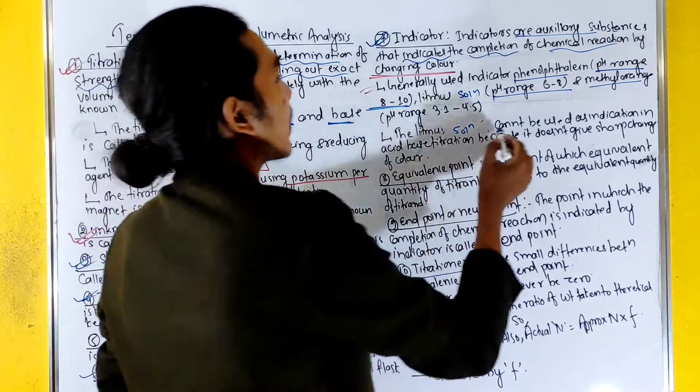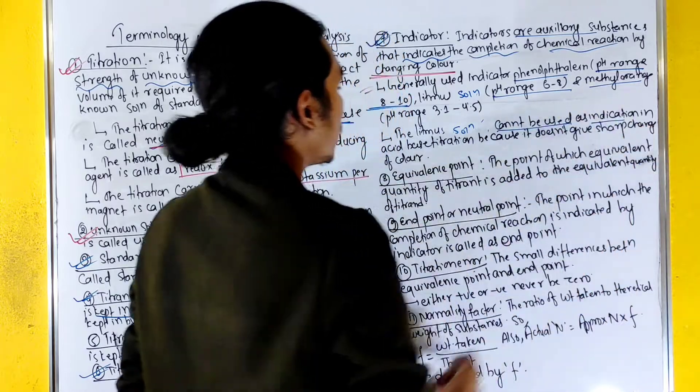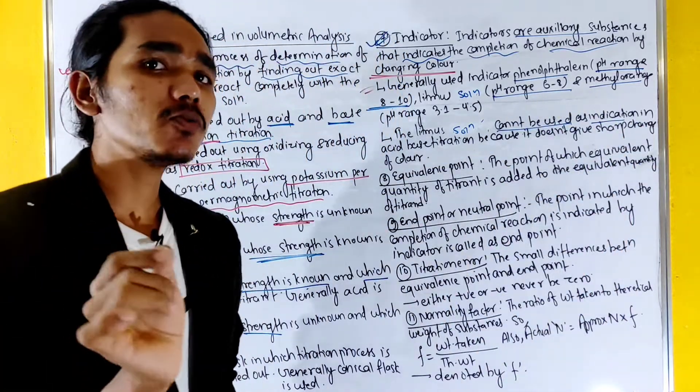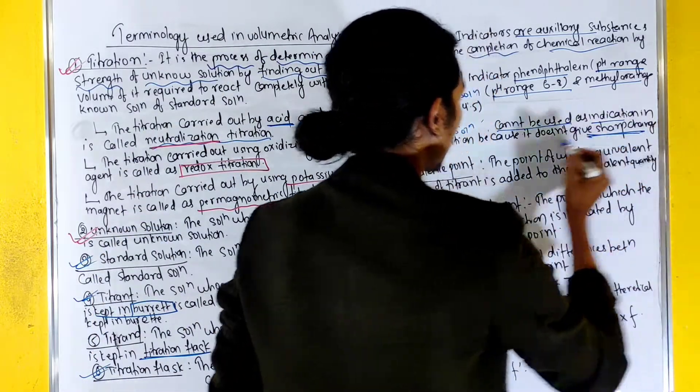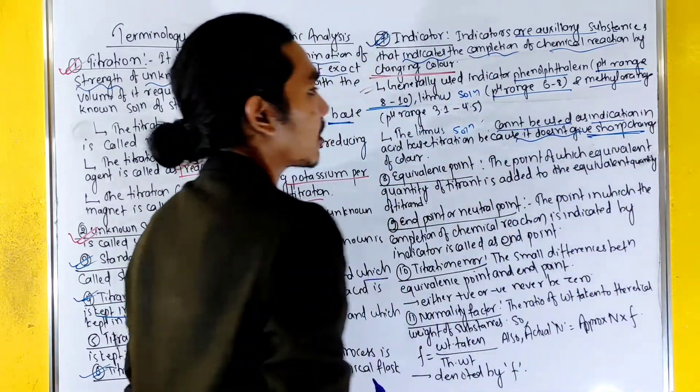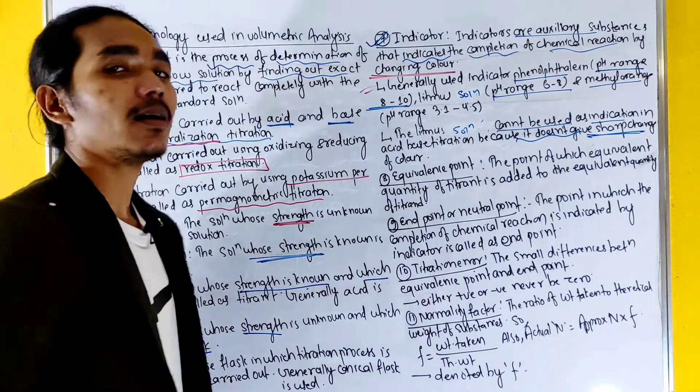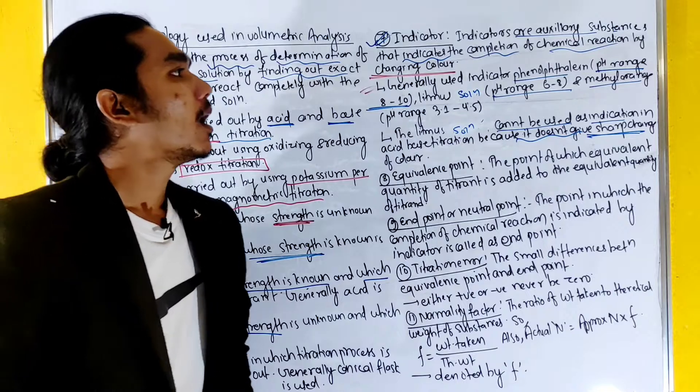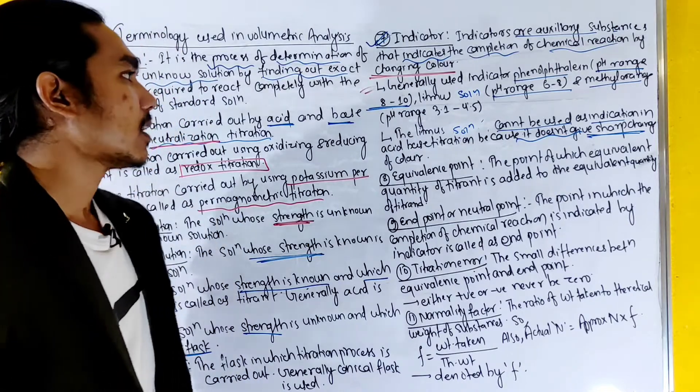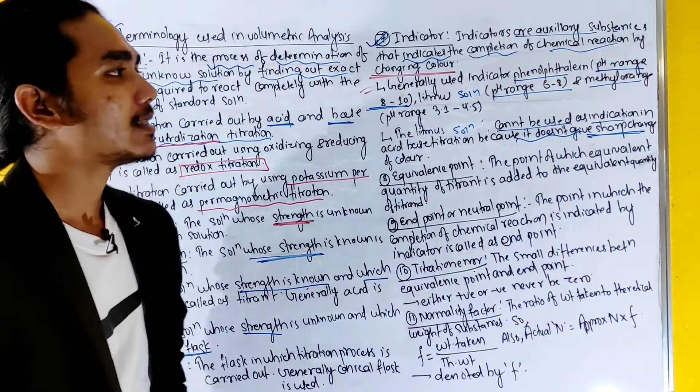Generally in acid-base titration we use indicator phenolphthalein or methyl orange. pH range is from 8 to 10. So we do not use it in all acid-base titrations.